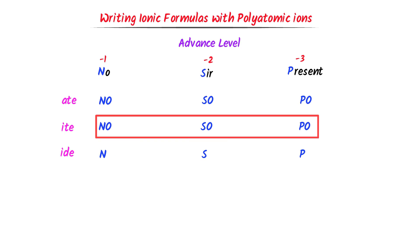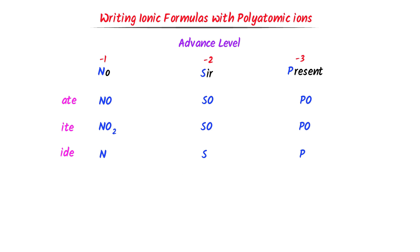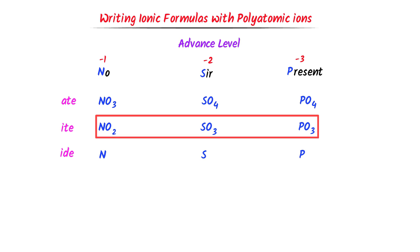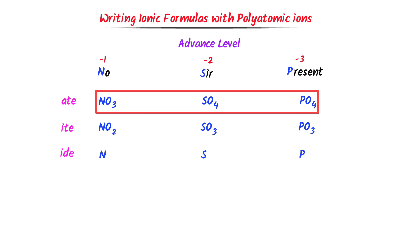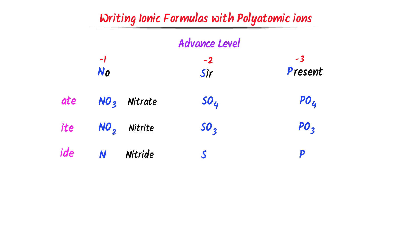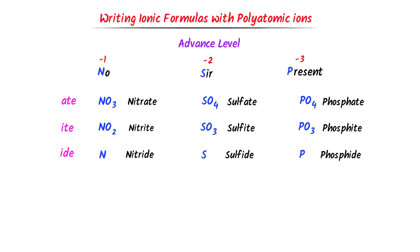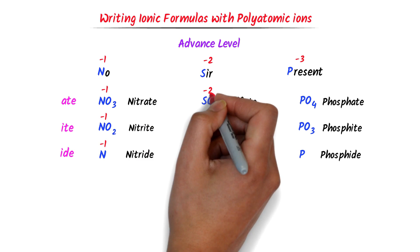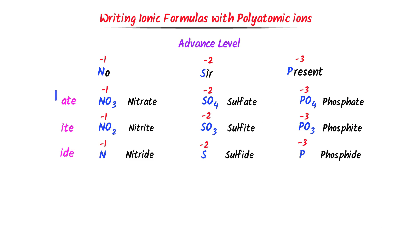I also start numbering from the second row. For the second row I write 2 and then 3, 3. For the first row I start from 3 and then write 4, 4. So the naming goes: nitrite, nitrate, and nitride for nitrogen; sulfite, sulfate, and sulfide for sulfur; and phosphite, phosphate, and phosphide for phosphorus. I use these numbers to assign charges to each family. Remember that ATE has one more oxygen than ITE, while IDE is simply for a single ion.